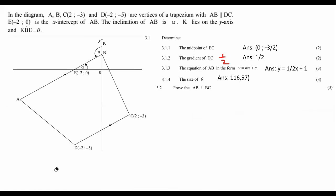The next question says calculate the equation of AB in the form y equals mx plus c. How are we going to find the equation if we don't have much about that line? However, these two lines are parallel. When two lines are parallel, they have the same gradient. We already worked out the gradient of DC — it was a half.